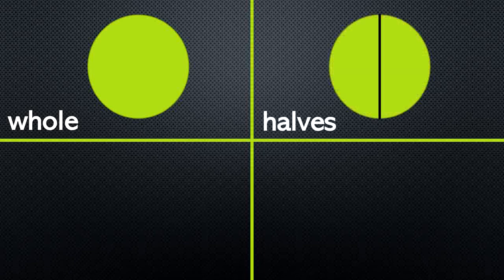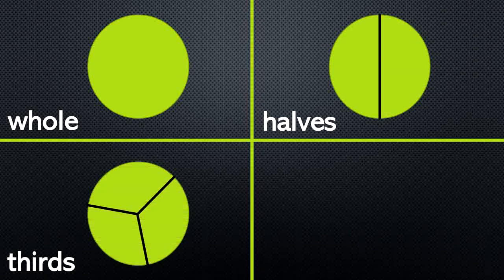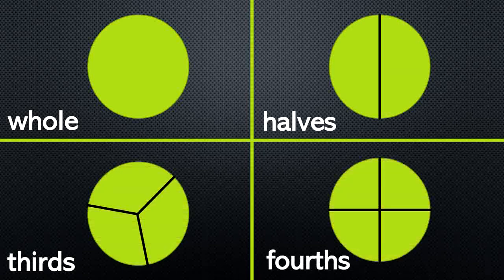Now let's look at whole, halves, thirds, and fourths again. Whole, halves, thirds, fourths. You can see that I took the same circle and divided it in different ways to show different fractions — different portions or sections of the circle. This doesn't have to be done with circles though. I can do it with other shapes too.